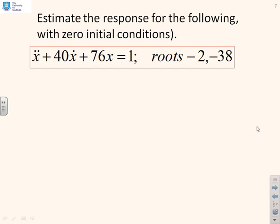So if I take that a bit further, what happens if somebody gave you an example like this for zero initial conditions? So ẍ + 40ẋ + 76x = 1. I can calculate the roots of the characteristic equation, there they are, -2 and -38.